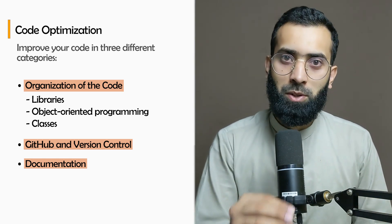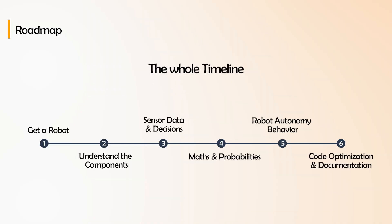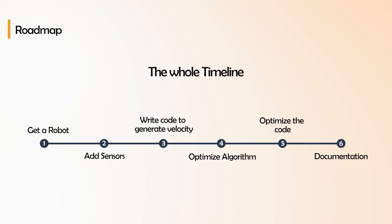This is the timeline that we are talking about: get a robot, add sensors, write code to generate velocity, optimize algorithm, optimize the code, and document. In these basic steps and roadmap, it is going to give you confidence on robotics projects and generally on robotics - understanding how they work.